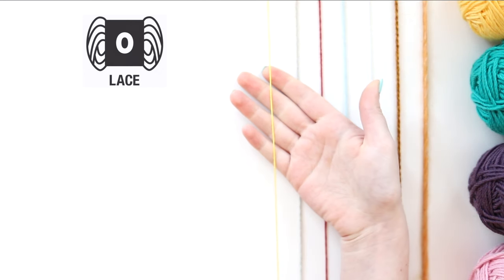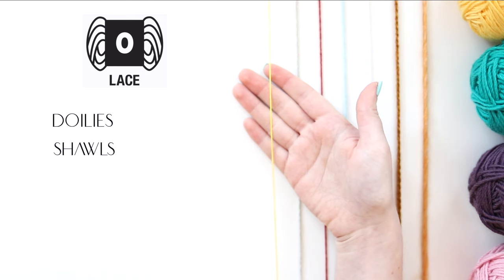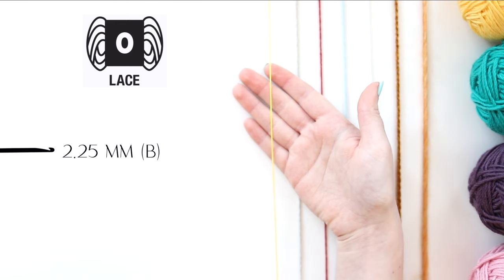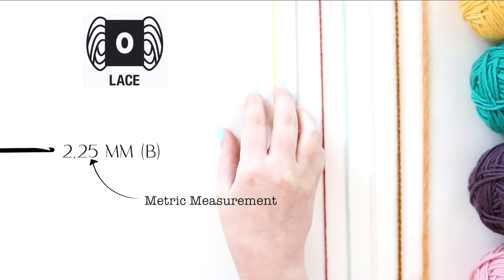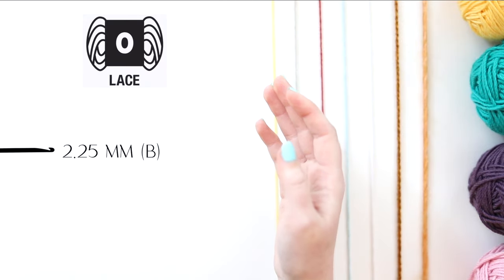First off, we have a zero weight yarn, otherwise known as lace or fingering weight yarn. This is the smallest weight of yarn and it's usually used to make things like doilies and very thin and delicate shawls. Its general recommended hook size is a 2.25mm hook. All hooks in the US have a metric or millimeter measurement. These are going to help you get used to understanding different hook sizes and being able to identify them.